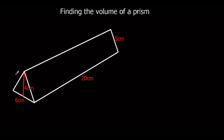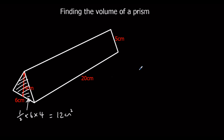Here we've got a triangular prism. The area of the cross section — the area of this shape here — multiplied by how far back it goes. So half times 6 times 4, which is 3 times 4, that's 12 centimeters squared. So the area of the cross section is 12. How far back it goes, the length, is 20. And 12 times 20 — well, 10 times 20 is 120, and double that — so 240 centimeters cubed.